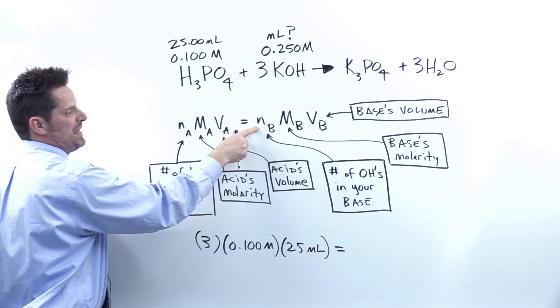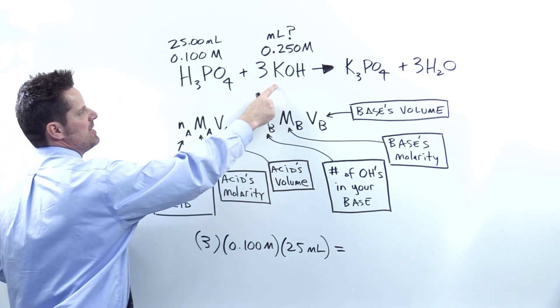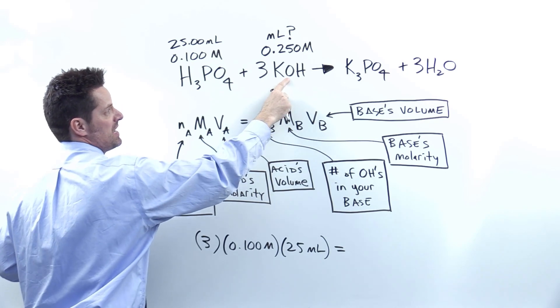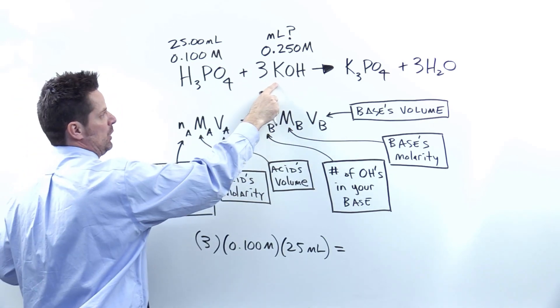Now I set that equal to Nb, the number of OH's in my base. My base is KOH. In that formula right there, how many OH's are there? Yeah, there's only one OH per KOH.